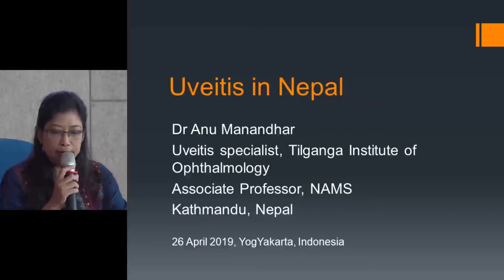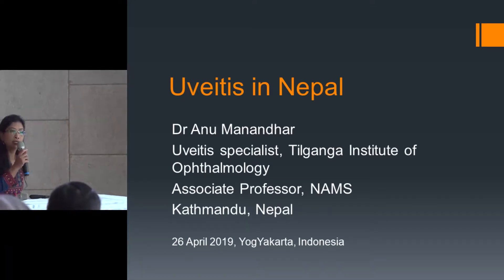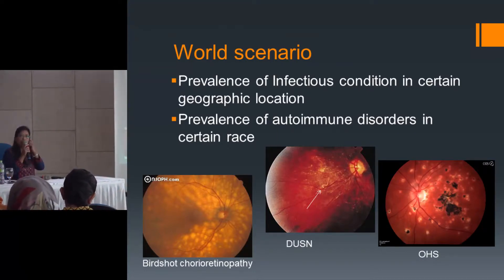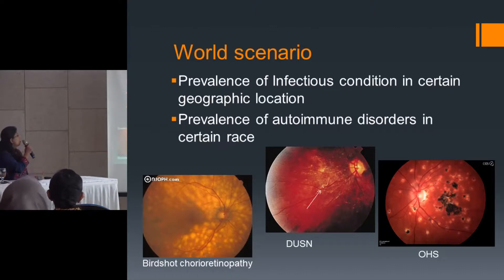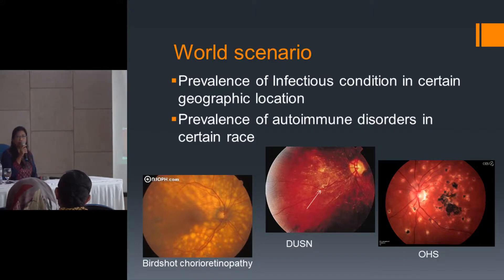I'm going to talk about the pattern of uveitis in Nepal. Uveitis is a very interesting topic and it varies from one part of the world to another. The pattern varies from region to region and from one race to another. The prevalence of infection differs because one kind of infection can be more common in one part of the world while another part may not have that infectious organism. Genetic differences between races also make a difference.